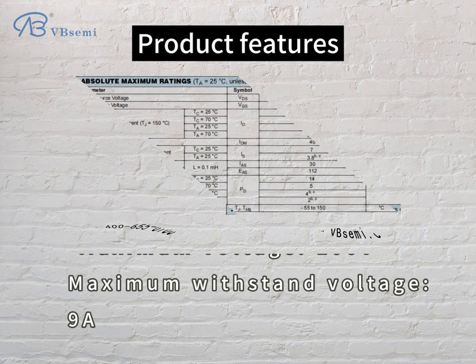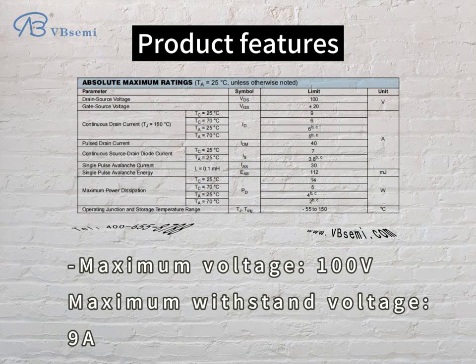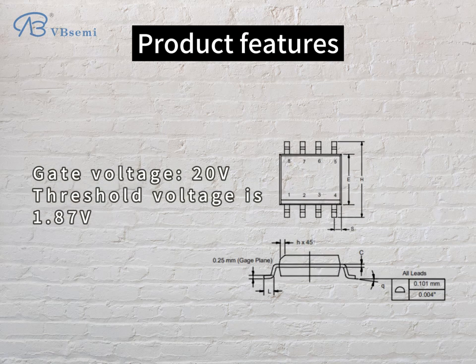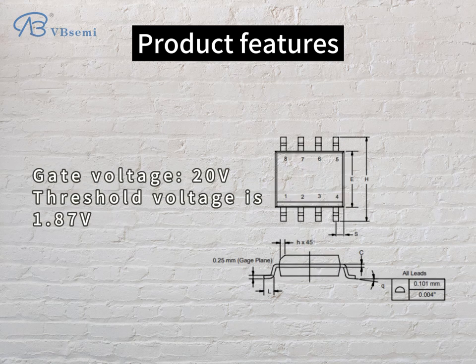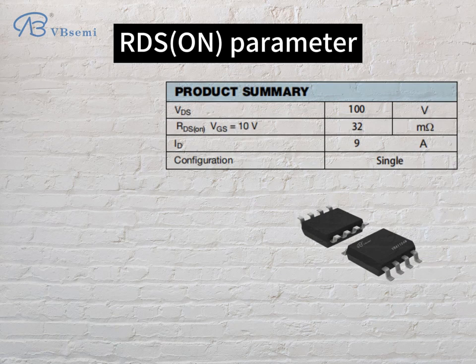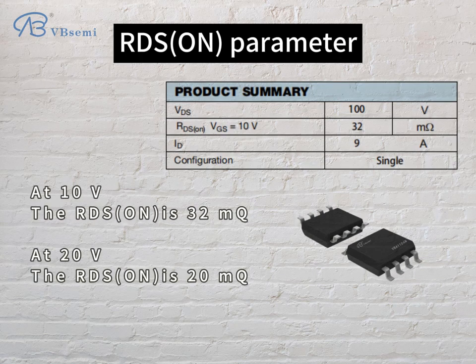Maximum voltage 100V, maximum withstand current 9A. Gate voltage 20V, threshold voltage is 1.87V. The RDS-ON parameter at 10V is 32mΩ.